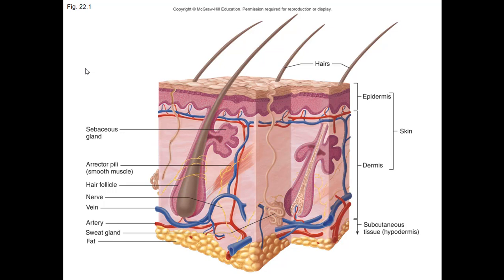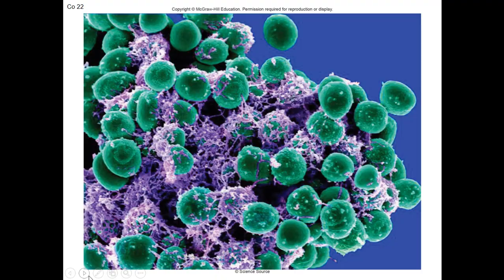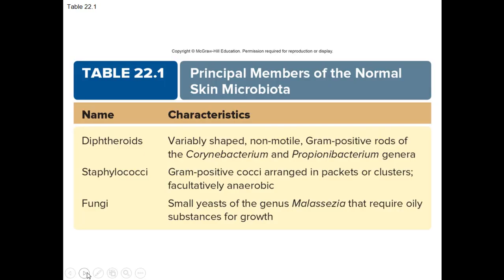Sebum is an oily secretion made by the sebaceous glands. Some bacteria break down the oil for fatty acids. We also have sweat glands, which provide a salty liquid that helps with temperature regulation. The normal pH range for skin is 4.0 to 6.8. Looking at table 21.1, you can see some of the normal microbiota of the skin. Abundance differs depending on where moisture exists.